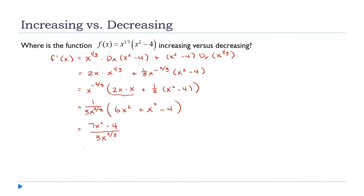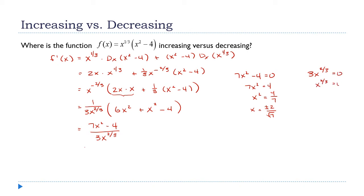Now I need the critical points. First, where is the derivative equal to zero? A fraction equals zero when its numerator equals zero: 7x² = 4, x² = 4/7, x = ±2/√7. Second, where is the derivative undefined? That's where the denominator equals zero: x^(2/3) = 0, so x = 0.